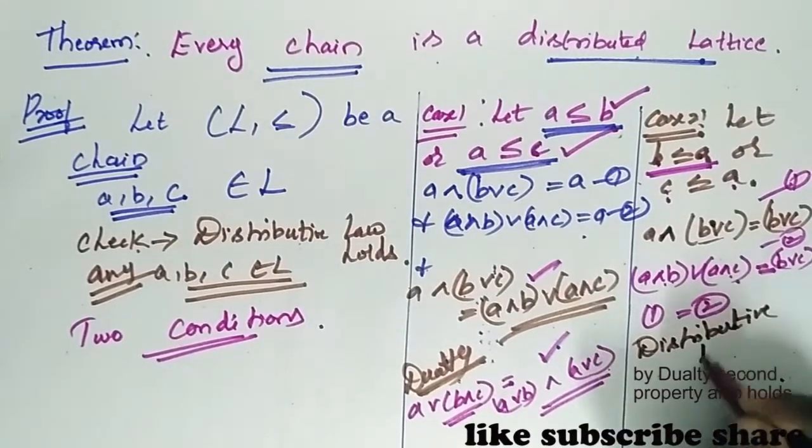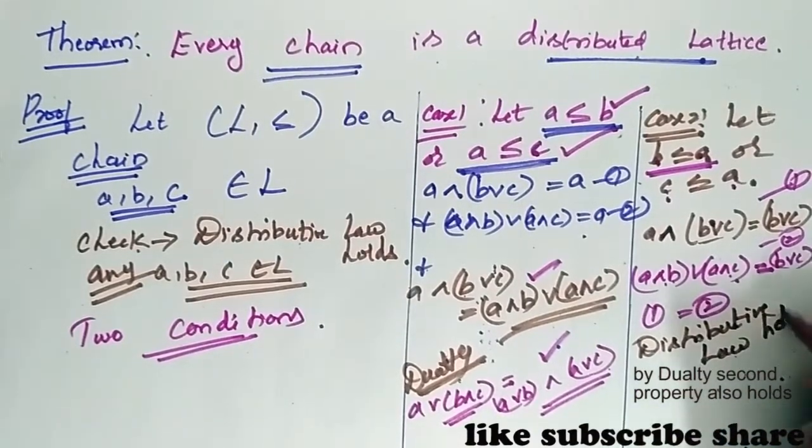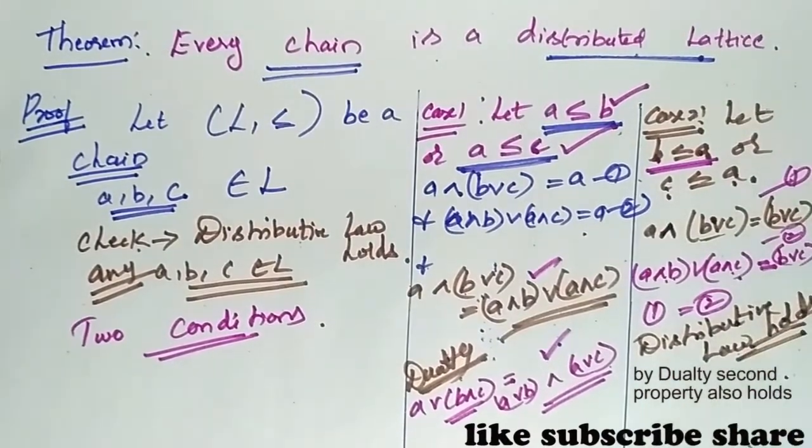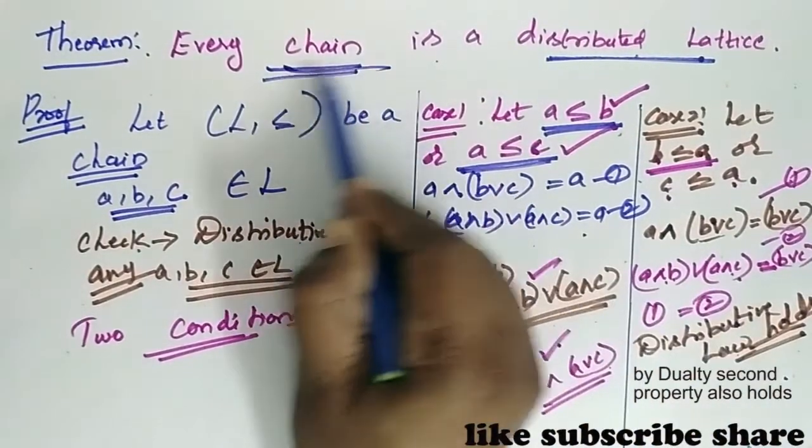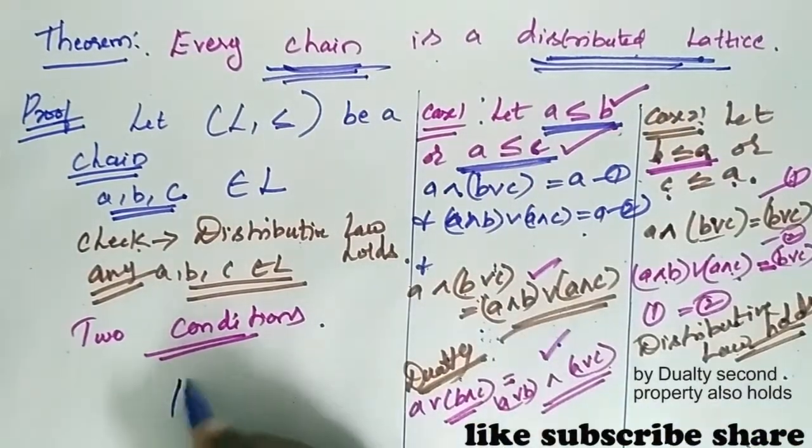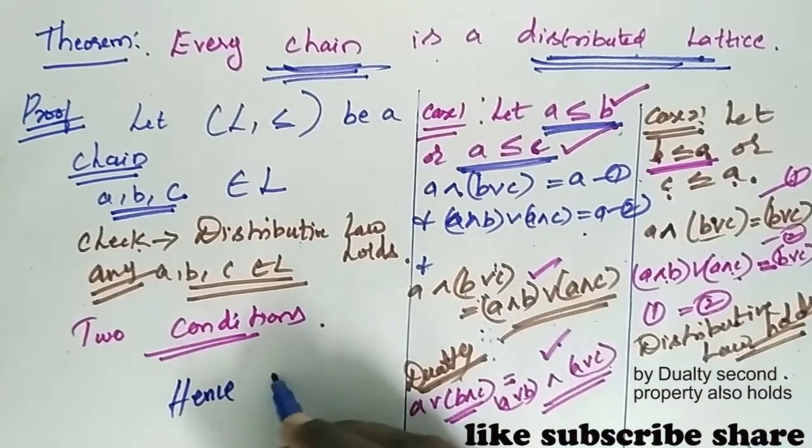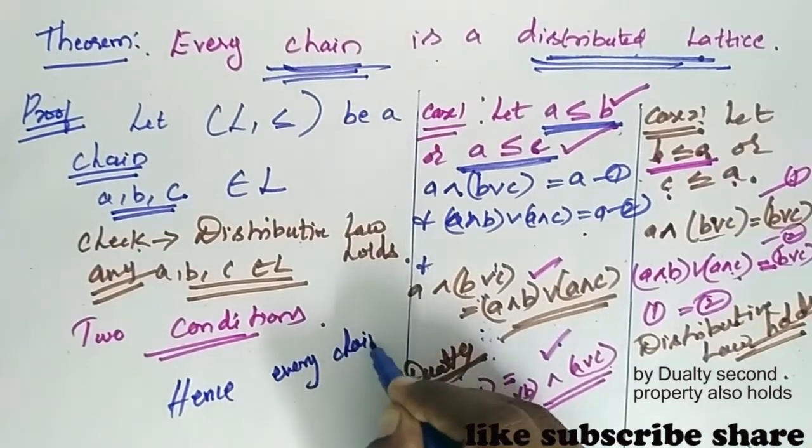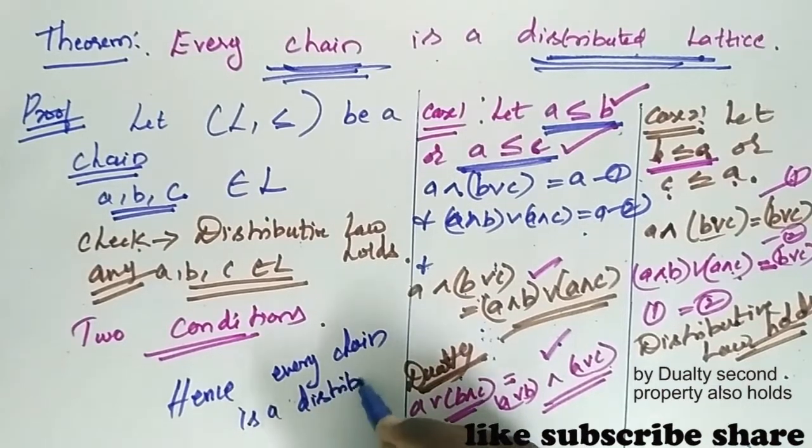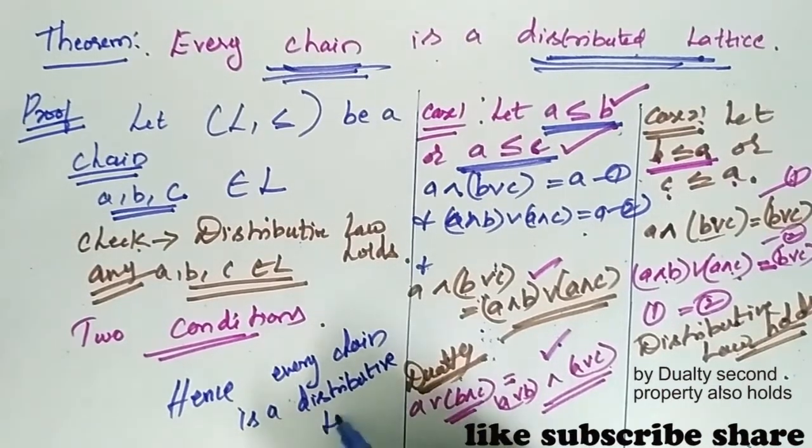The distributive law holds for all a, b, and c. Hence, every chain is a distributive lattice.